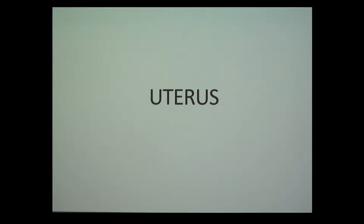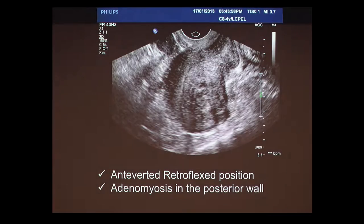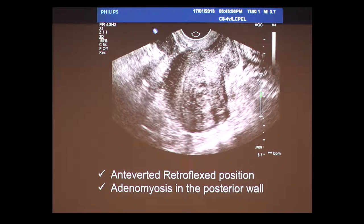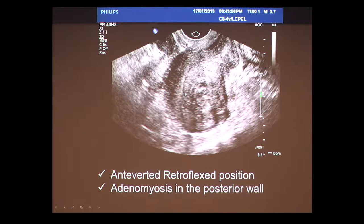I won't spend much time on the uterus since everyone knows how to look at it, but one key thing: if you see a uterus that wants to sit in an anteverted position but is then completely retroflexed — pulled to the back — with normal anterior myometrium but thick and heterogeneous posterior myometrium indicating adenomyosis in the posterior wall, that is a huge red flag for severe deep infiltrating endometriosis. Almost certainly there will be deep infiltrating endometriosis in that pelvis.